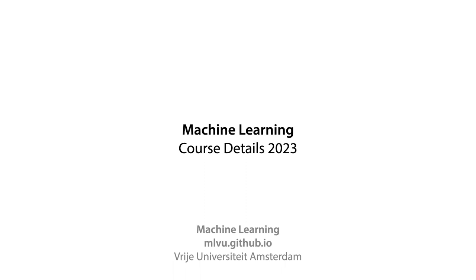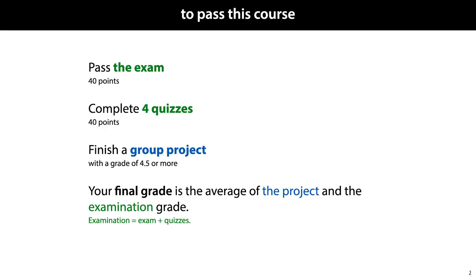In this video we will explain the details of how the course machine learning is run and what you need to do to pass. To pass you will need to pass the exam, to complete four quizzes, to finish a group project. If you do all these three things, your final grade will be the average of the project and the examination grade, whereby examination we mean the combination of the exam and the quizzes.